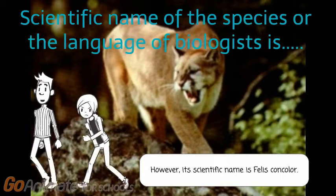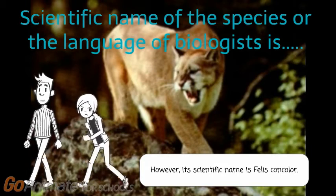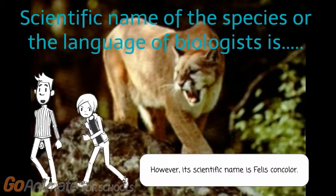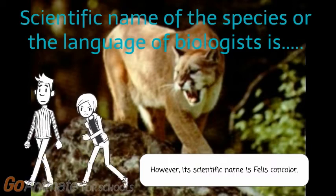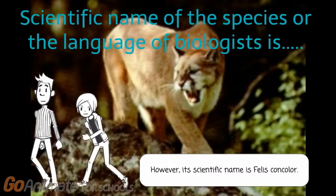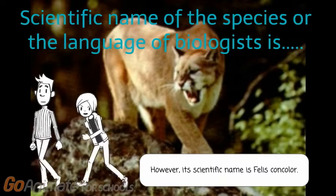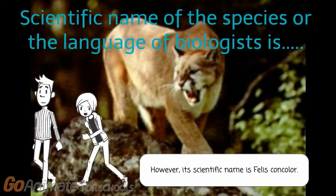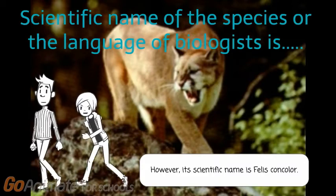Carl Linnaeus designed a system of naming organisms called binomial, which gave each one two names: genus and species. For example, mountain lion, cougar, and puma are all common names for the same animal. The name you decide to use probably depends on where you live.